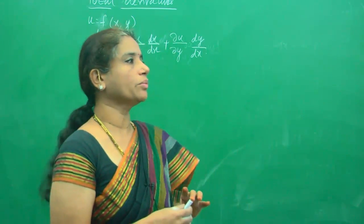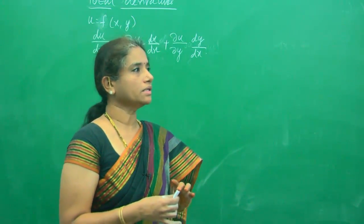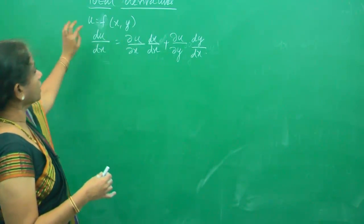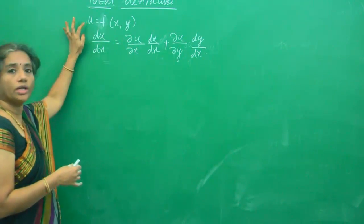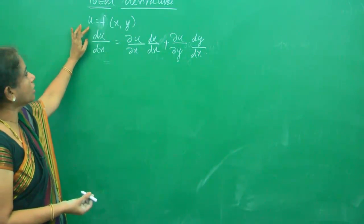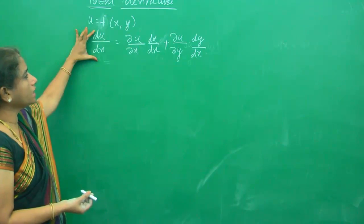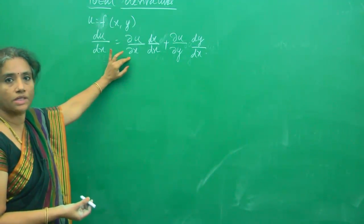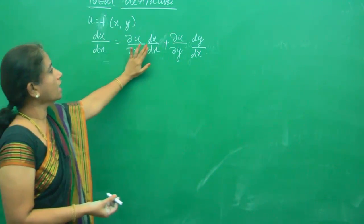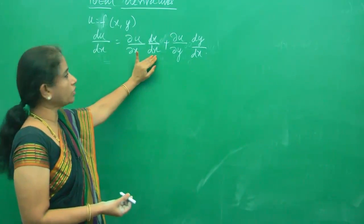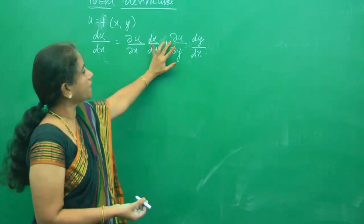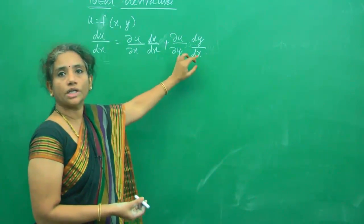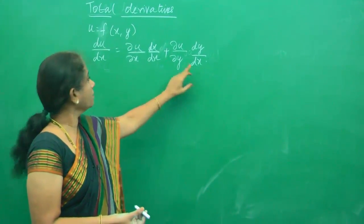Hi everybody, we will do one more problem in total derivatives. So the total derivative formula — du by dx — you must be thorough now: partially differentiate with respect to x, then differentiate totally with respect to x, then partially differentiate u with respect to y and differentiate y with respect to x.